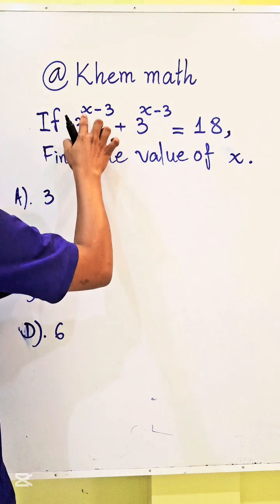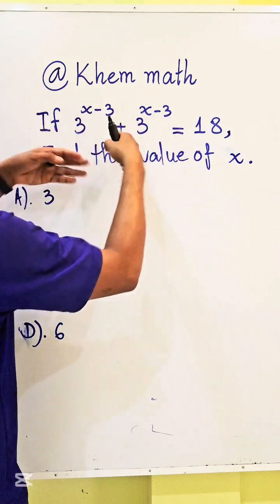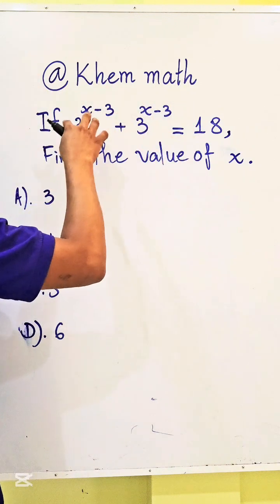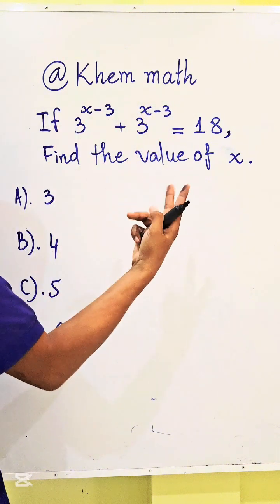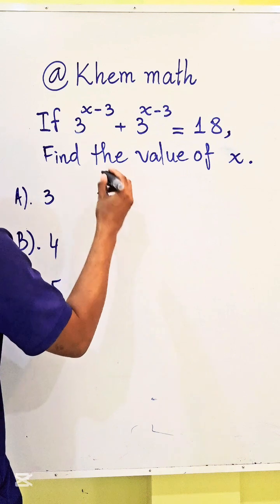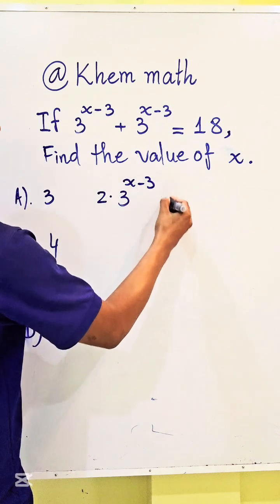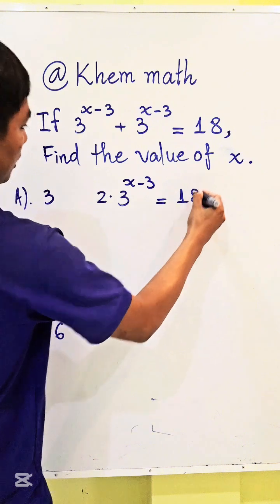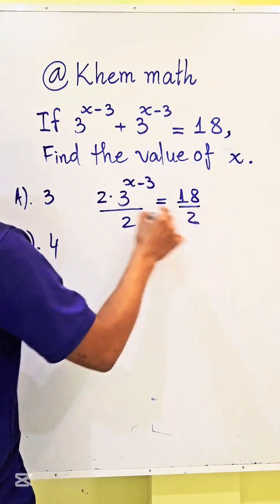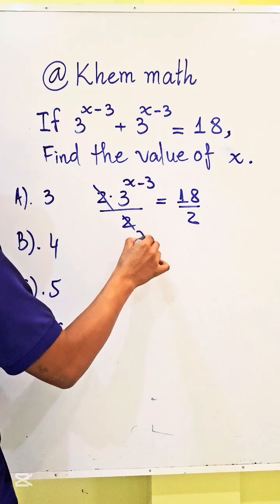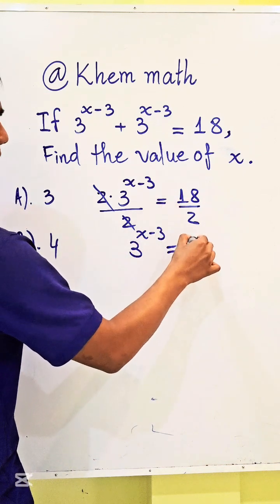First, you see this? 3 power x minus 3, and here is 3 power x minus 3 — it is the same. So we must combine them. If 2 of the same term are added together, we get 2 times 3 power x minus 3 equals 18. Then we divide both sides of this equation by 2. We simplify to get 3 power x minus 3 equals 18 divided by 2, which equals 9.